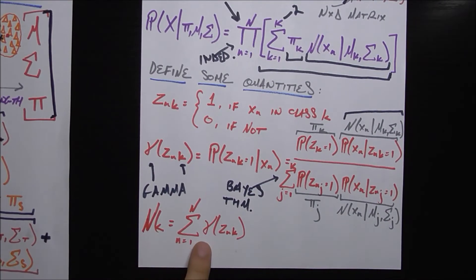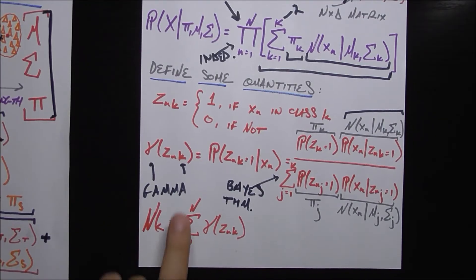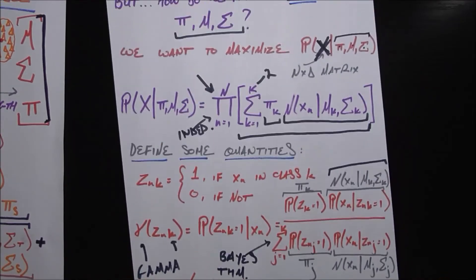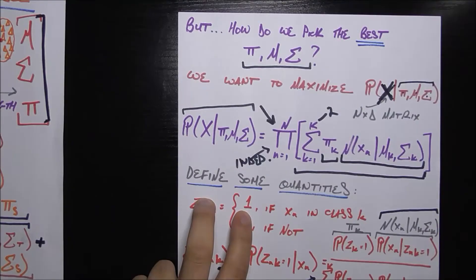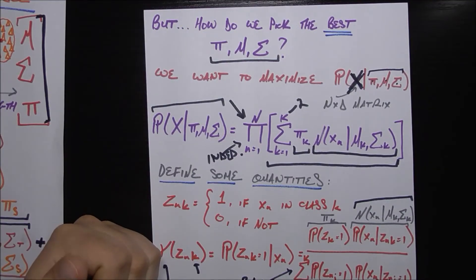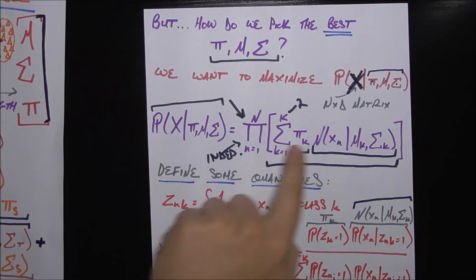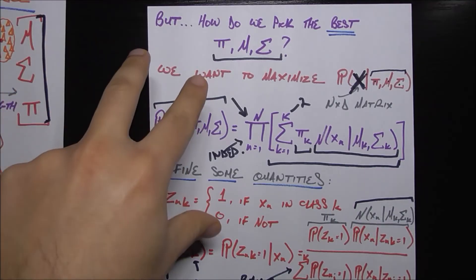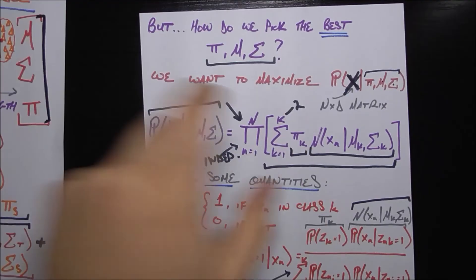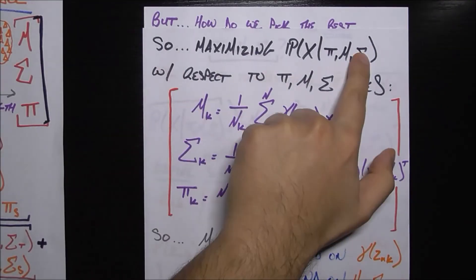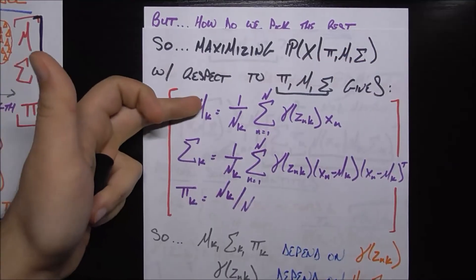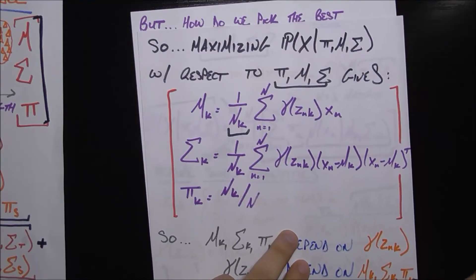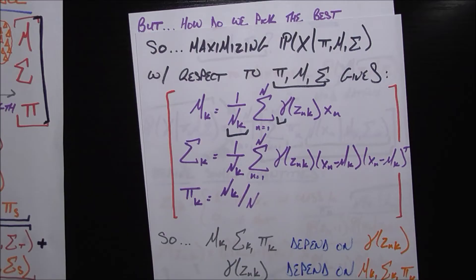N_k is simply the sum of gamma(z_nk) from n equals one to n. These auxiliary quantities are defined because when we maximize the likelihood by taking derivatives with respect to pi_k, mu_k, and sigma_k and setting them to zero, the optimal solutions for mu_k, sigma_k, and pi_k all depend on these gammas and N_k. So knowing the gammas lets us compute the optimal parameters.